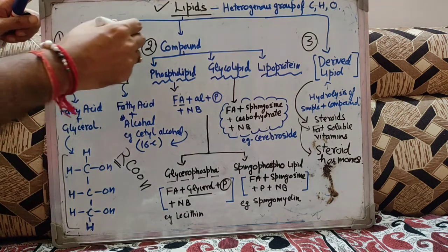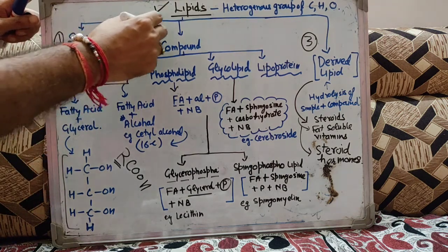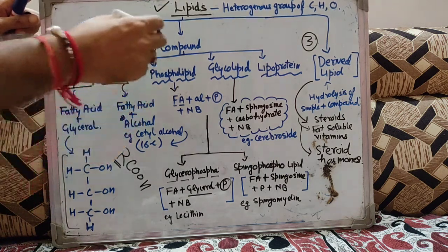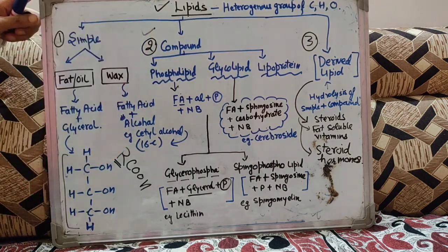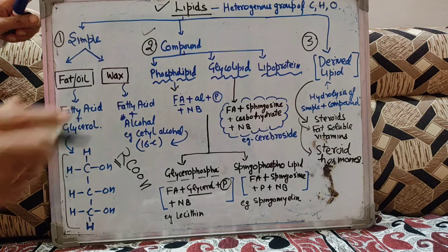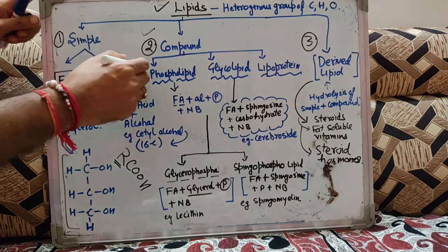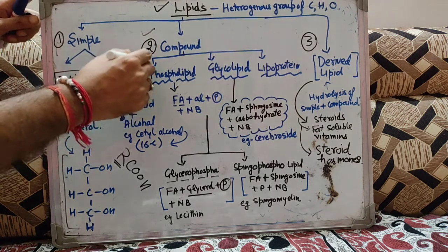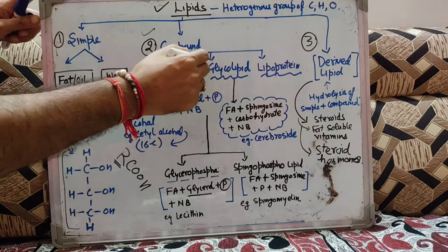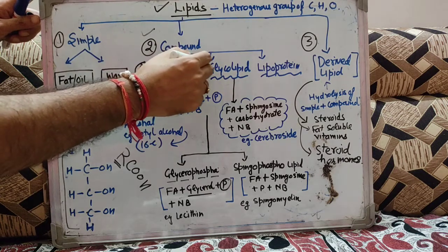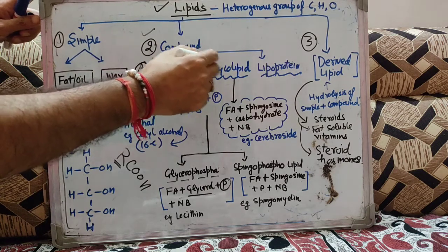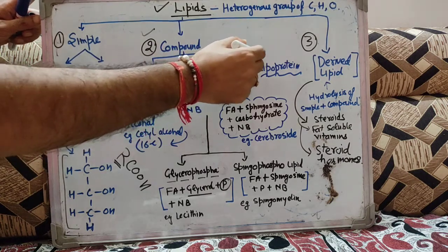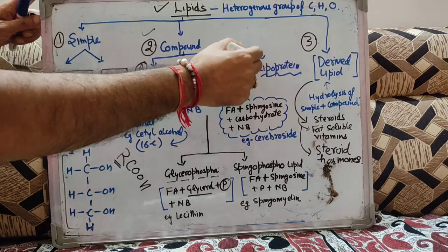आईए second category के ऊपर चलते हैं. Second category is compound lipids. Compound lipids जो होते हैं, यह 3 types के हो सकते हैं.